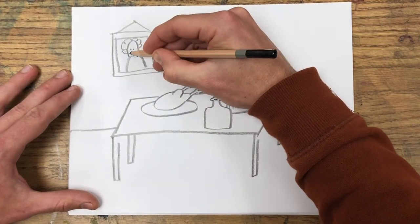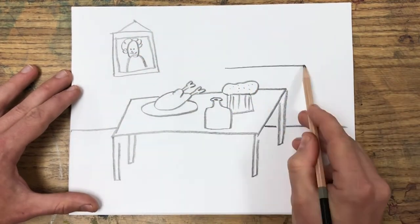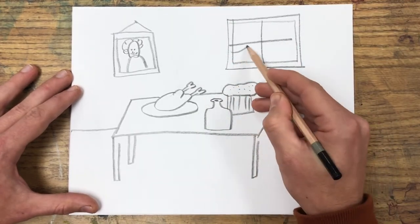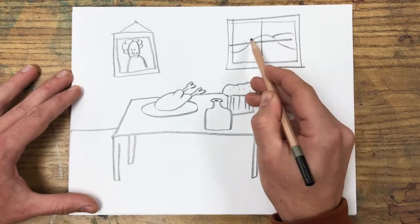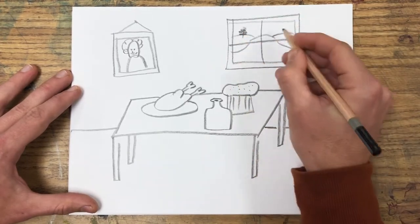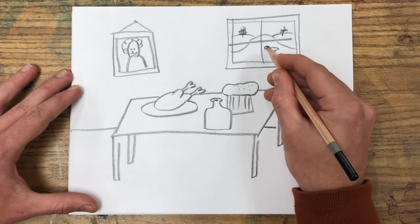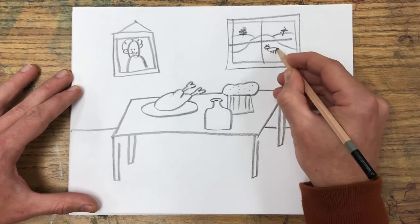This looks like a Thanksgiving dinner. How about a window looking out onto the hills in the background, some little pine trees and Rufus out in the yard? Beautiful.